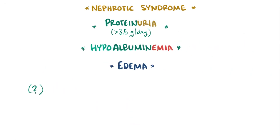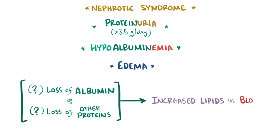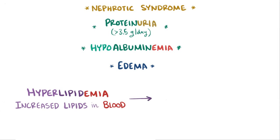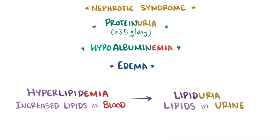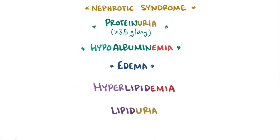It's thought that as a result of either losing albumin or losing some protein or proteins that inhibit the synthesis of lipids, or fat, you get increased levels of lipids in the blood, called hyperlipidemia. Just like the proteins, these lipids can also get into the urine, causing lipiduria. And those are the hallmarks of nephrotic syndrome: proteinuria, hypoalbuminemia, edema, hyperlipidemia, and lipiduria.